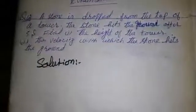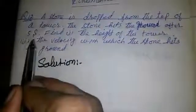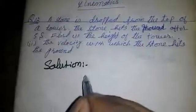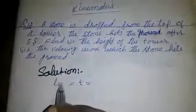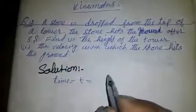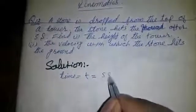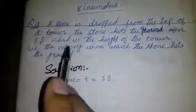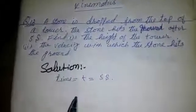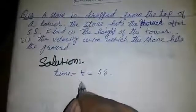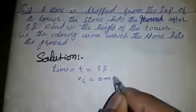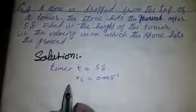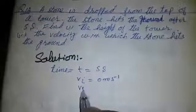The given data is: time t equals 5 seconds. When the stone drops from the top of the tower, the initial velocity vi equals 0 meters per second, and we have to find its final velocity.